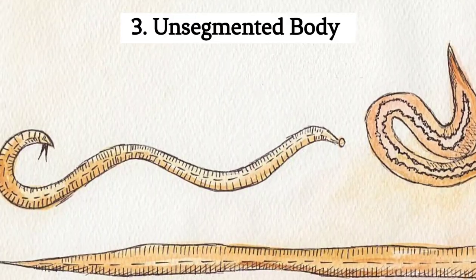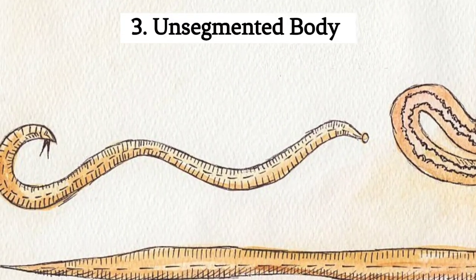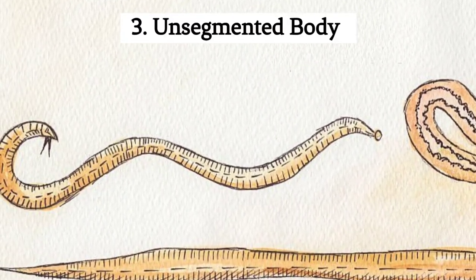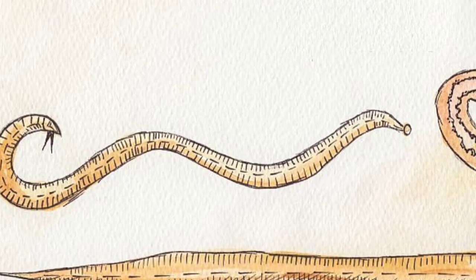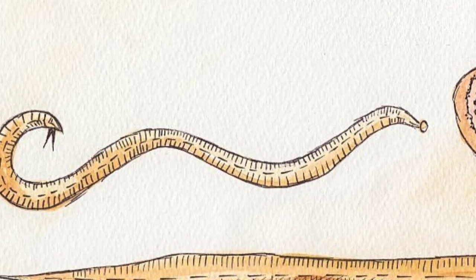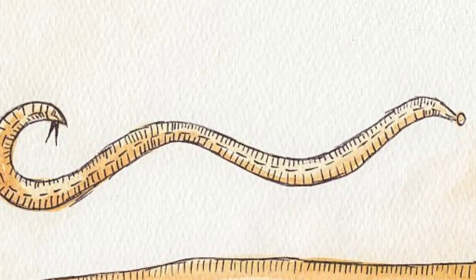3. Unsegmented body. Nematodes have a cylindrical, unsegmented body shape, distinguishing them from segmented worms like annelids.